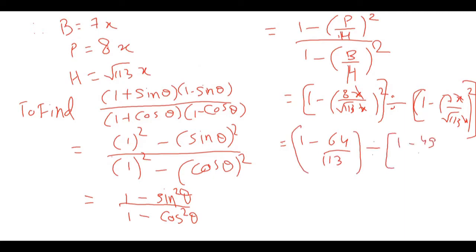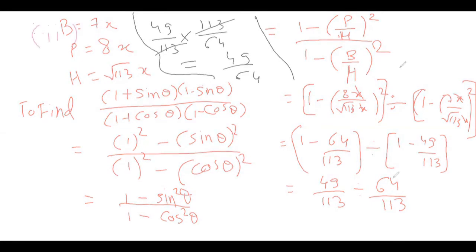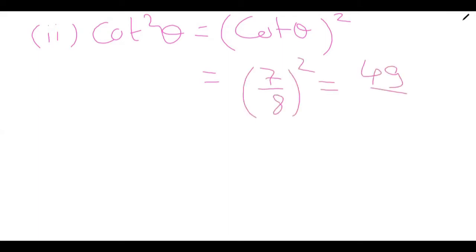Taking LCM: numerator becomes (113 − 64)/113 = 49/113, and denominator becomes (113 − 49)/113 = 64/113. Dividing gives 49/64 as the answer. The second part is cot²θ = (cot θ)² = (7/8)² = 49/64.